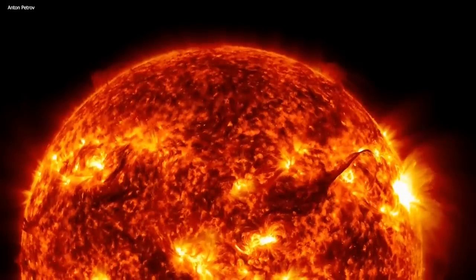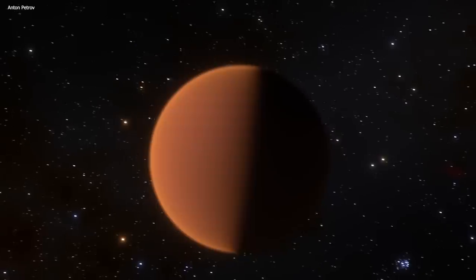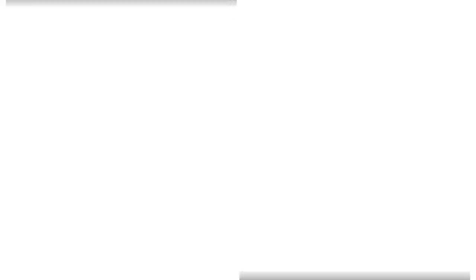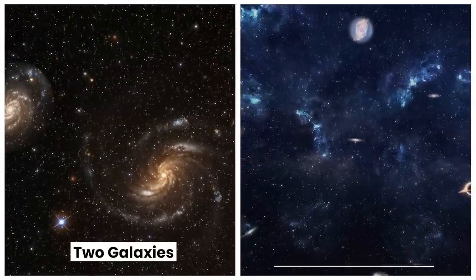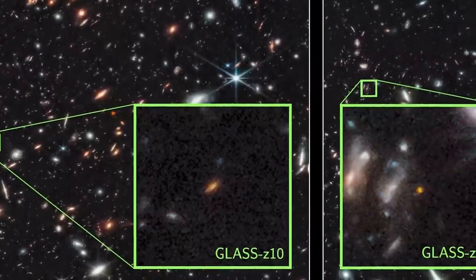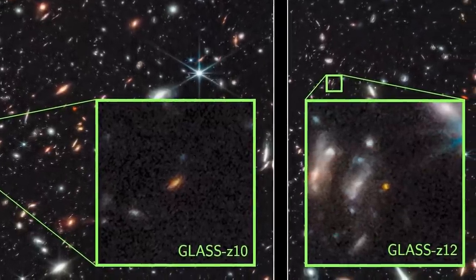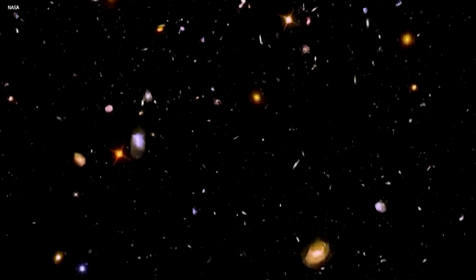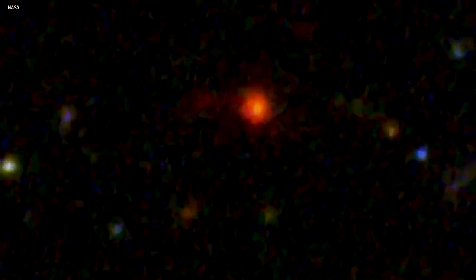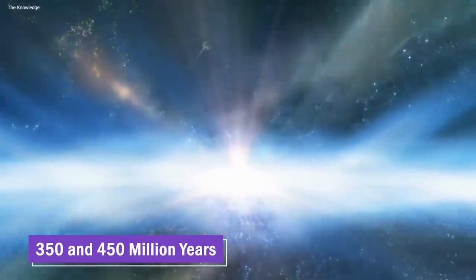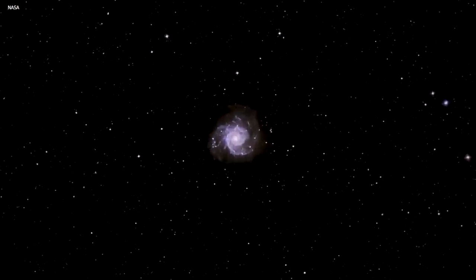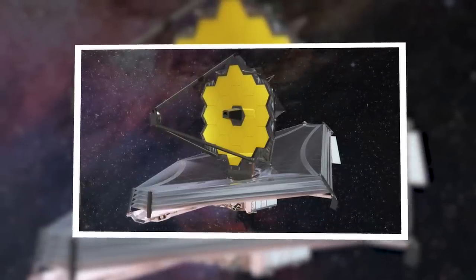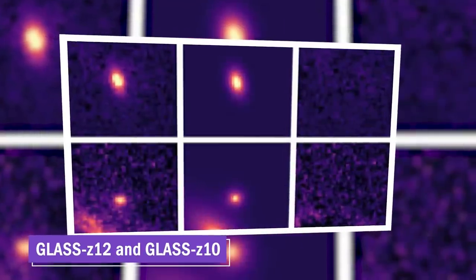But that's not the only insane discovery. And some of these discoveries are making us question everything we have ever known. Two galaxies have been causing quite a stir in the world of cosmology. Glass Z-12 and Glass Z-10, two truly extraordinary galaxies, are like cosmic celebrities, really, given they're among the most distant and luminous galaxies we've ever seen. They date back to mere 350 and 450 million years after the Big Bang. Now you might be wondering who or what found these galaxies. The answer is the James Webb Space Telescope, which is quite a marvel.